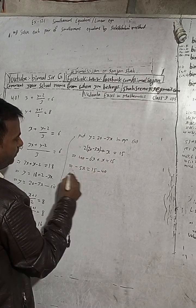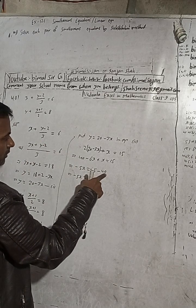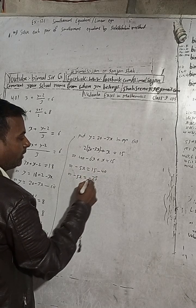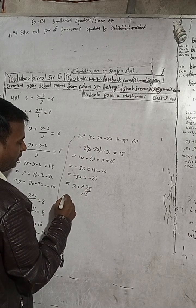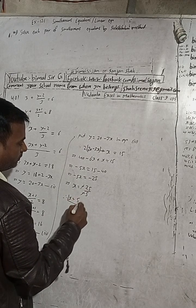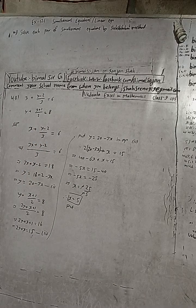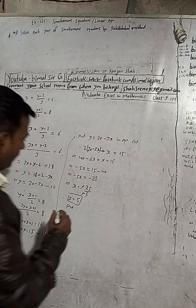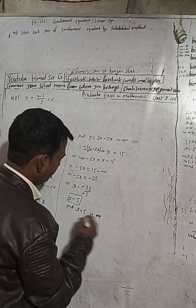We have minus 5x plus 40 equals 15, so minus 5x equals 15 minus 40, which is negative 25. Dividing both sides by minus 5: the negatives cancel, and therefore x equals 25 divided by 5, which is 5.